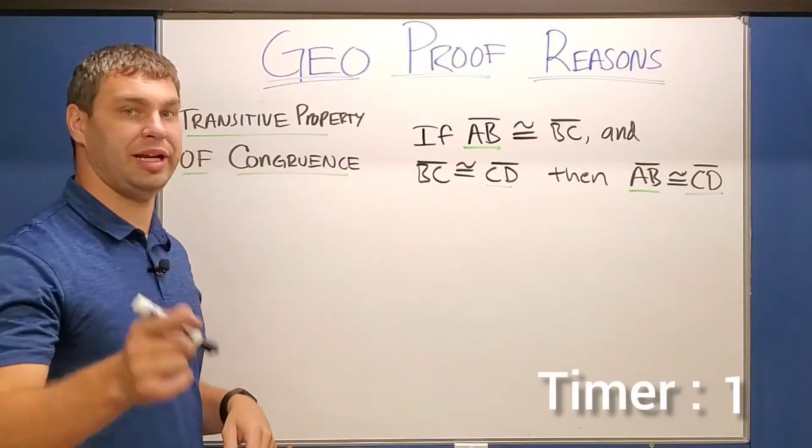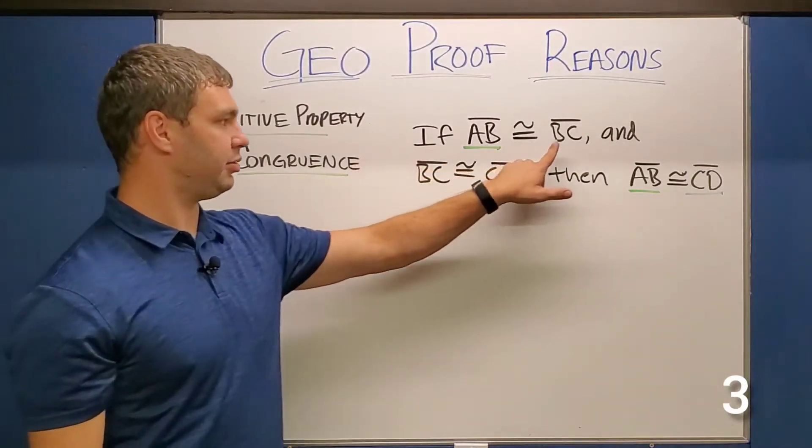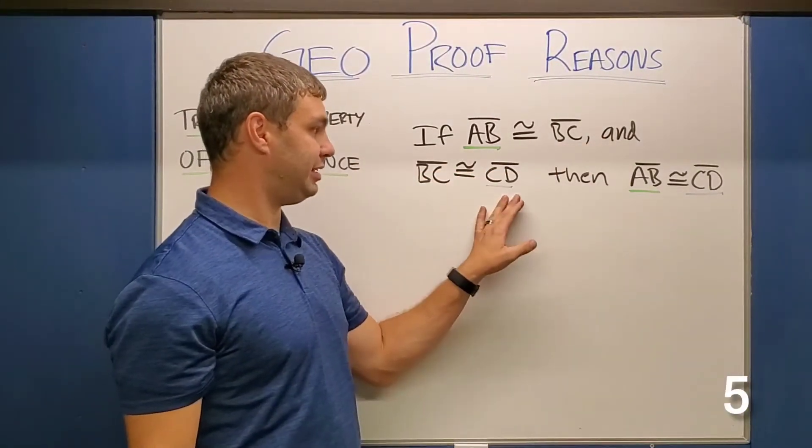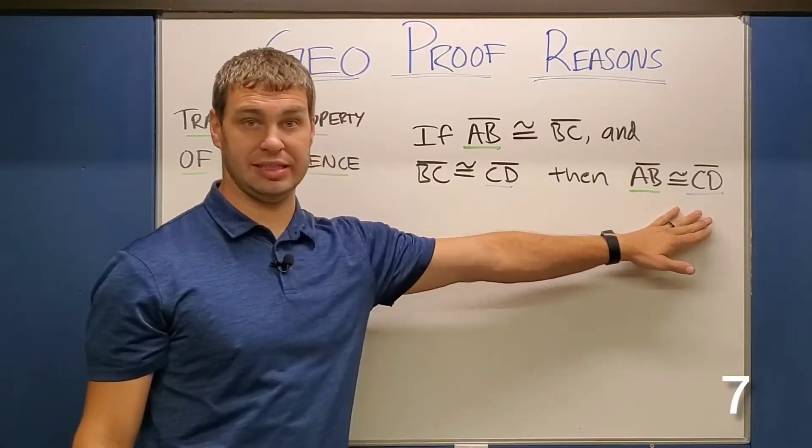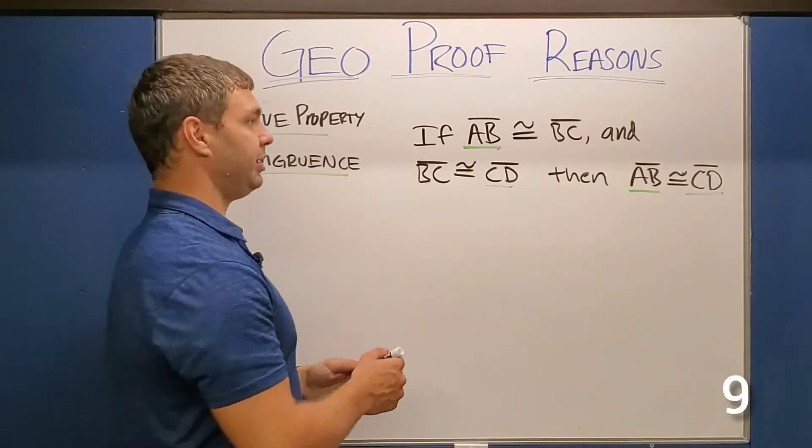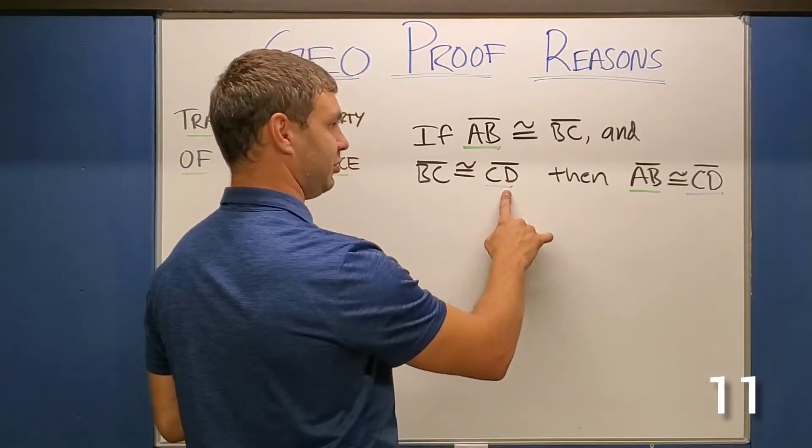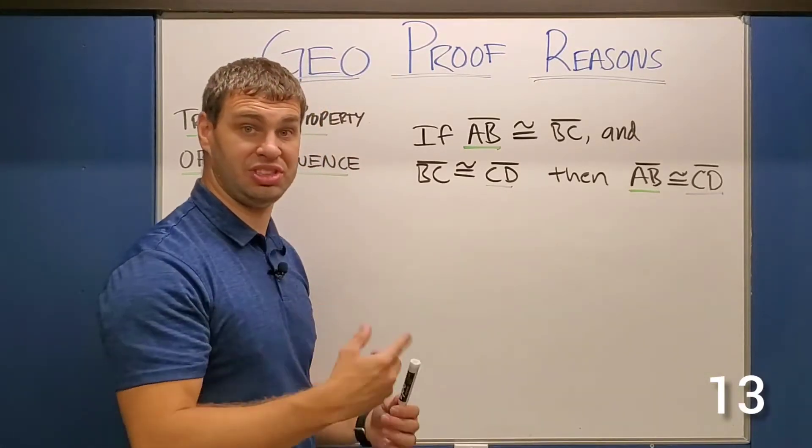All right guys, quick definition here for the transitive property. It says if AB is congruent to BC and BC is congruent to CD, then AB is congruent to CD. You'll notice I have a couple of these underlined because this first one is going to end up being congruent to our last one because they're both congruent to our second.